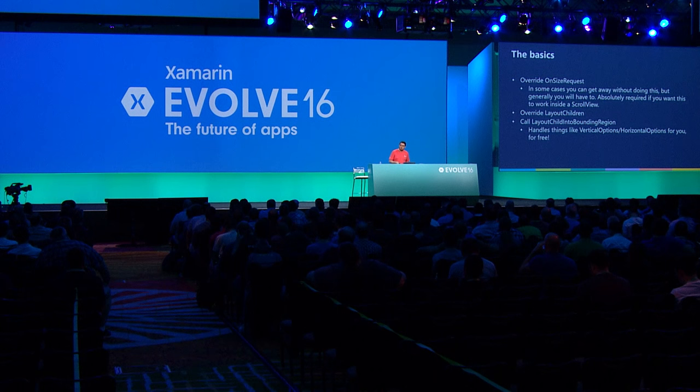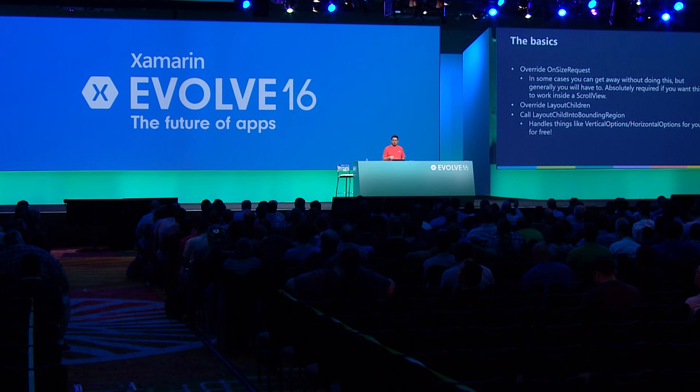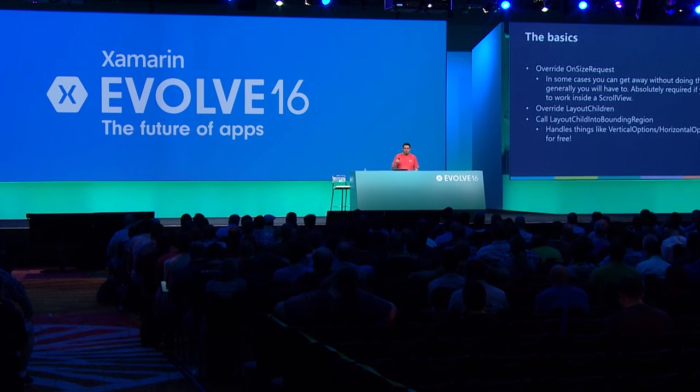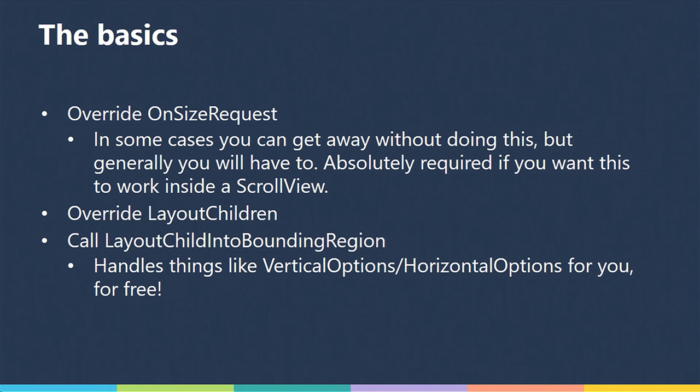We're going to go over custom layouts in depth in my next talk and actually live-code it. Basically, you have to override onSizeRequest, layoutChildren, and layoutChildIntoBoundingRegion. Those are the three methods — they're really easy to implement. The first two are measurements, and the last one is the one you call to actually perform the layout.